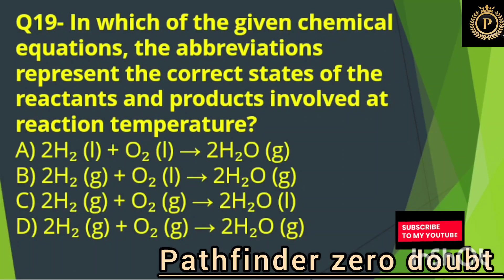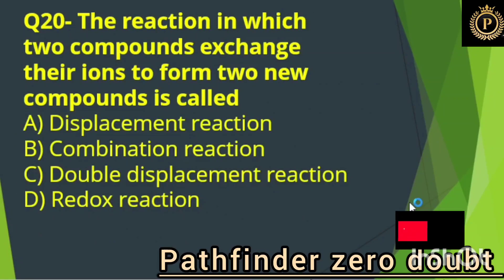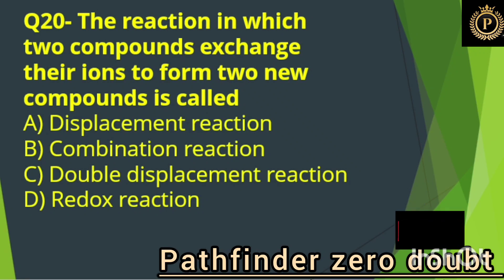In which of the given chemical equations does the abbreviation represent the correct state of the reactants and products involved at reaction temperature? Option C. The reaction in which two compounds exchange ions to form two new compounds is called: Option C, double displacement reaction.